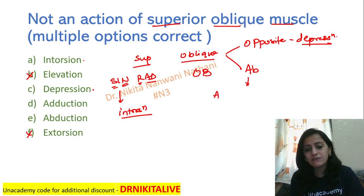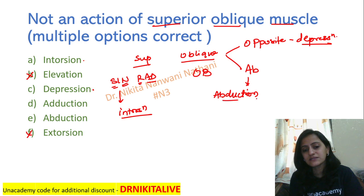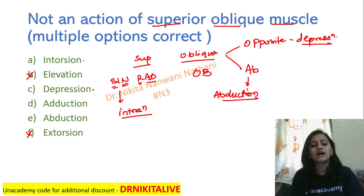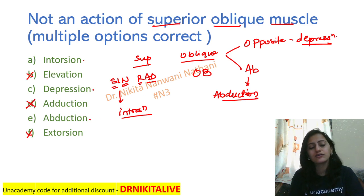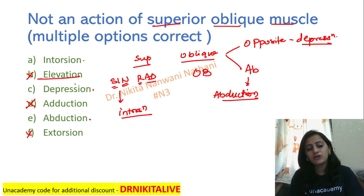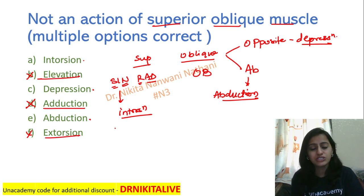OB is AB: oblique muscles are abductors, they cause abduction. So yes, they cause abduction and not adduction. Therefore, superior oblique does not cause elevation, adduction, or extorsion.